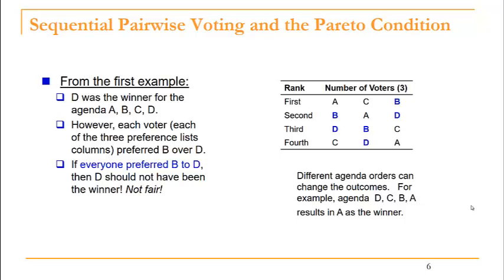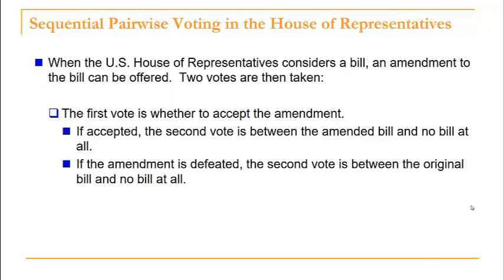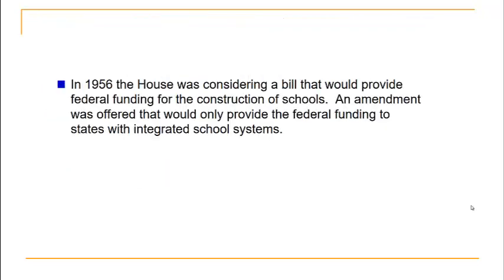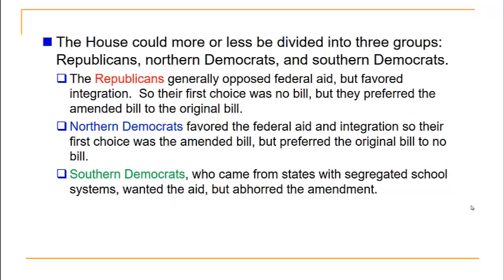A real-life example of sequential pairwise voting is used in the US House of Representatives. When a bill is considered, an amendment can be offered and two votes are taken: first, whether to accept the amendment, then the amended bill versus no bill at all; if the amendment is defeated, the vote is between the original bill and no bill. In 1956, the House considered a bill providing federal funding for school construction, with an amendment to fund only states with integrated school systems.